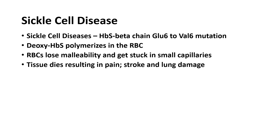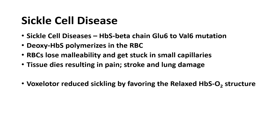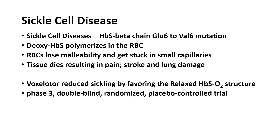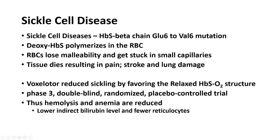This results in pain, stroke, lung damage, and kidney damage. Voxelotor reduces sickling by favoring the relaxed hemoglobin S with oxygen-bound structure — that's the relaxed form. When it has oxygen bound, it doesn't polymerize. The Phase 3 double-blind randomized placebo-controlled trial showed that hemolysis and anemia were reduced, with lower indirect bilirubin levels and fewer reticulocytes.